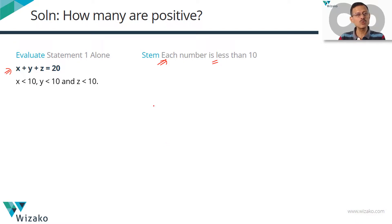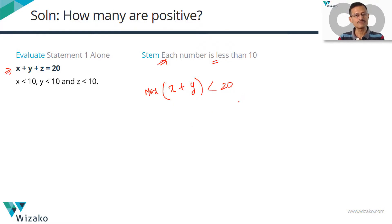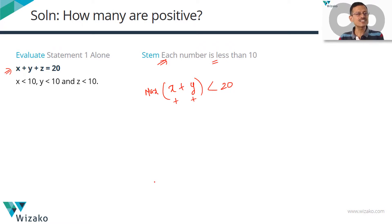Let's pick two of these three numbers — say x and y. How high can the sum of x and y be? Both x and y are less than 10, so they can inch towards 10 but never reach it. The maximum possible sum for x and y will always be less than 20. This maximum sum happens only when we maximize both x and y, which means both x and y must be positive.